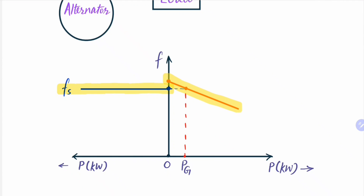For the alternator we know that the fp characteristic will be as shown. The moment when the alternator was synchronized, the frequency of the incoming machine was kept slightly higher than the infinite bus bar frequency. So that the moment when the alternator was connected and synchronized, the point of operation gave a very small power pg supplied by the alternator, because its no-load frequency was kept slightly higher than the system frequency.